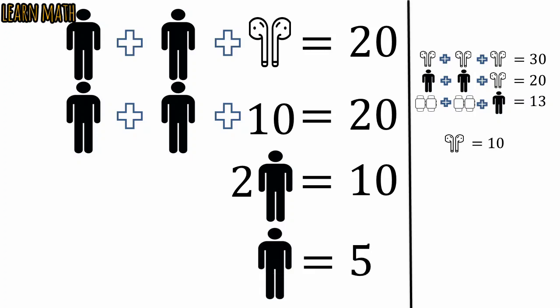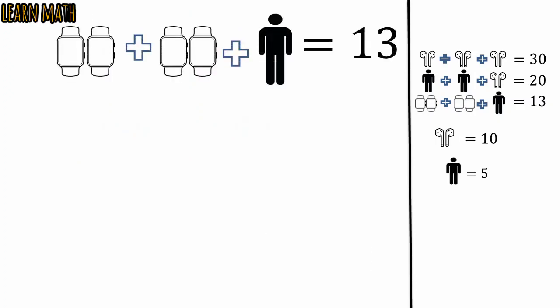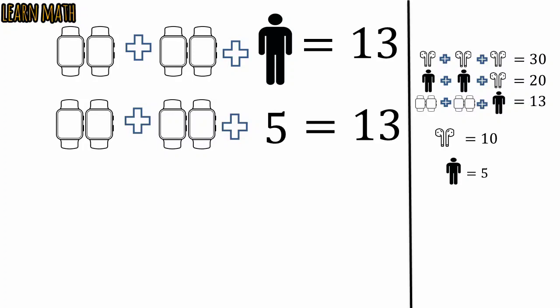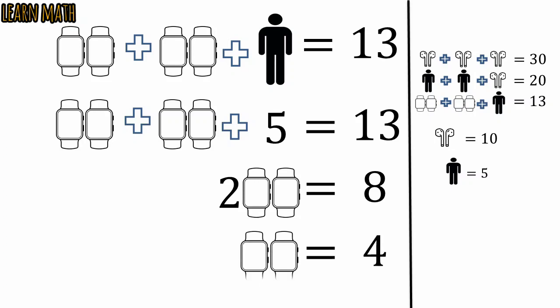Now the third equation is this one. Put man is equal to 5 in this equation and we will get this. Subtract 5 from 13 and you will get two pair of watches is equal to 8. Dividing both sides by 2 we will get one pair of watches is equal to 4.